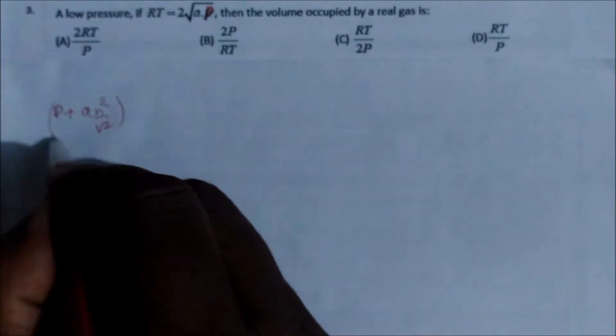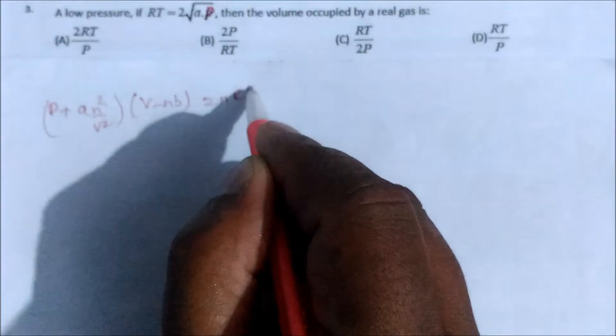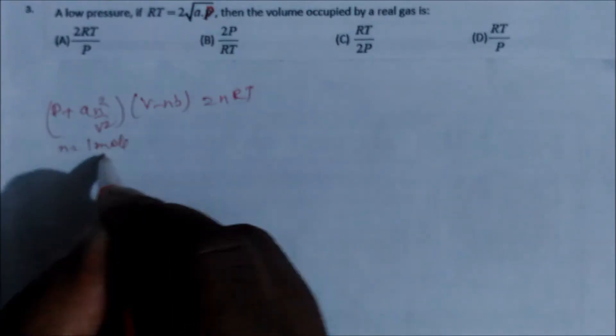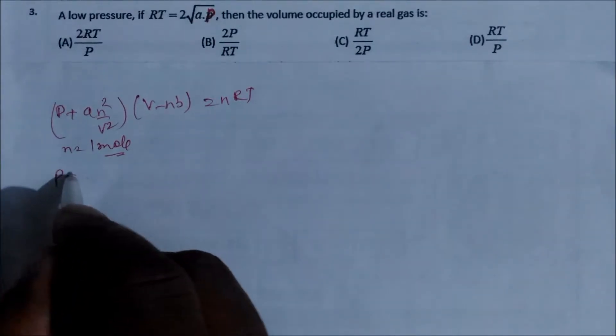So we have Van der Waals equation: P plus a into n square by V square, multiplied by V minus n into b, is equal to n into RT. If you suppose you take n equal to one mole, if not given we have to take one mole since n is not given. So if you take n equals 1, P plus a.